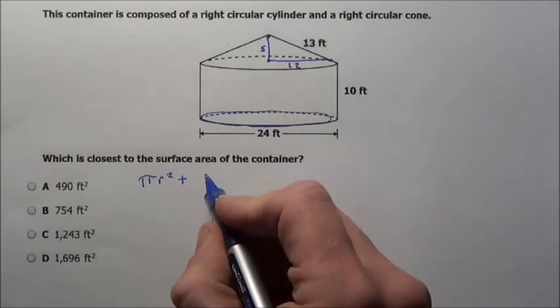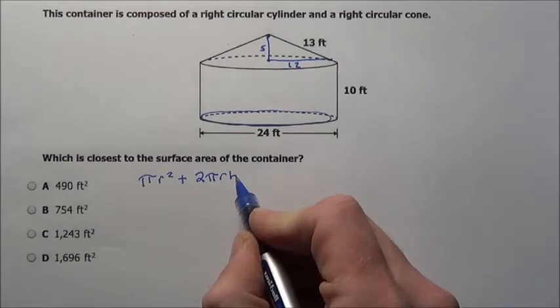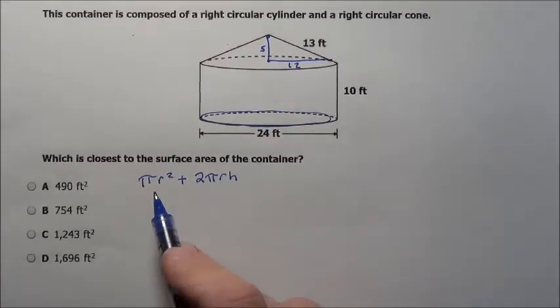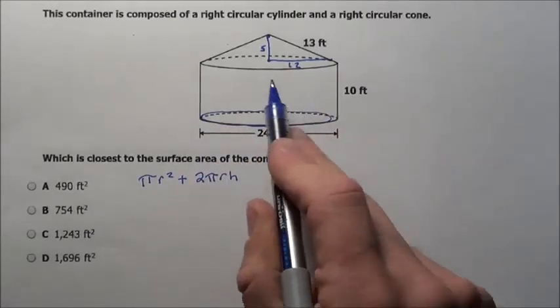If we look up the lateral area, that's going to tell us that it's simply 2 pi r times the height. So this and this will give me the surface area of the bottom and the lateral part here.